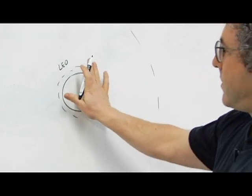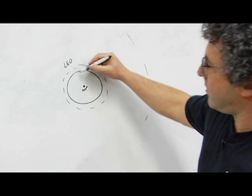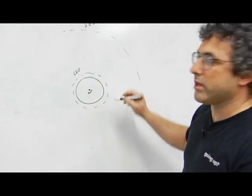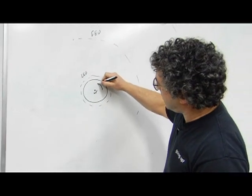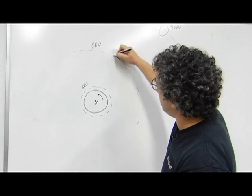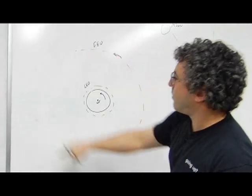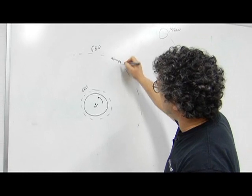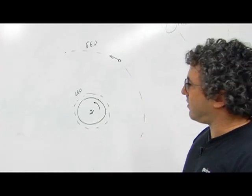So, the Earth is spinning in the plane of the picture, and this would be the equator of the Earth, right? So, if the Earth is spinning this way, and the satellite is traveling here, and it takes it 24 hours to go around, the satellite would always be over the same spot in Earth.